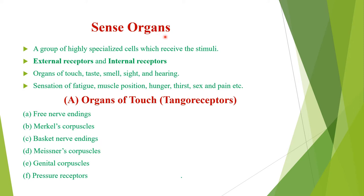Now we will discuss sense organs. Sense organs are a group of highly specialized cells which receive stimuli. They are of two types: external receptors and internal receptors. External receptors are mainly organs of touch, taste, smell, sight, and hearing, stimulated by changes in the environment. Internal receptors are for the sensation of fatigue, muscle position, hunger, thirst, sex, and pain, stimulated by stimulus from the body itself.